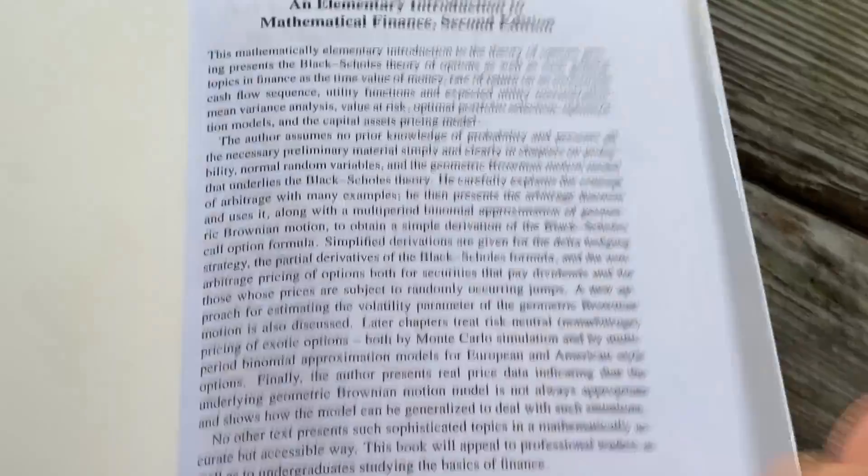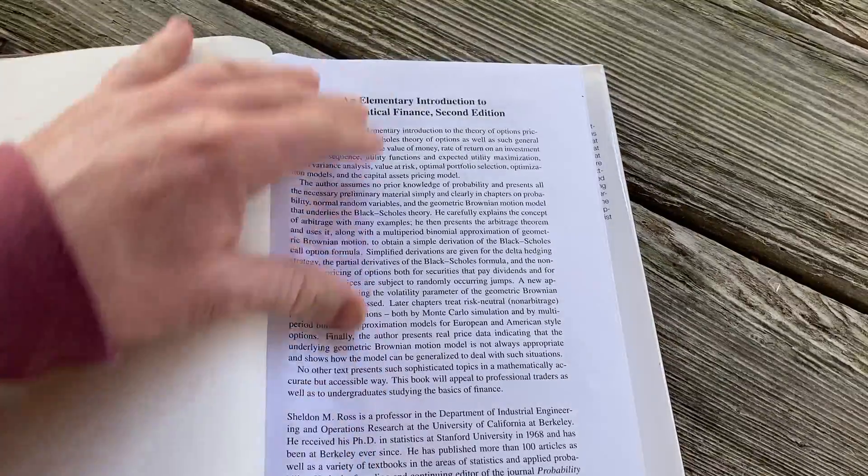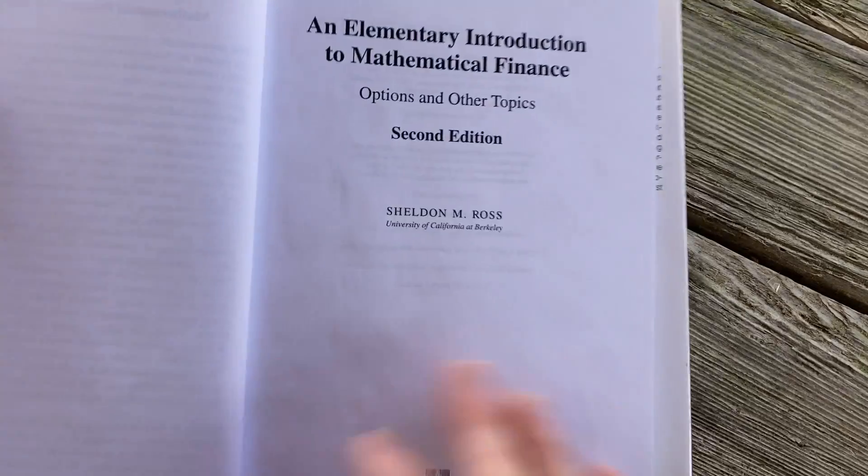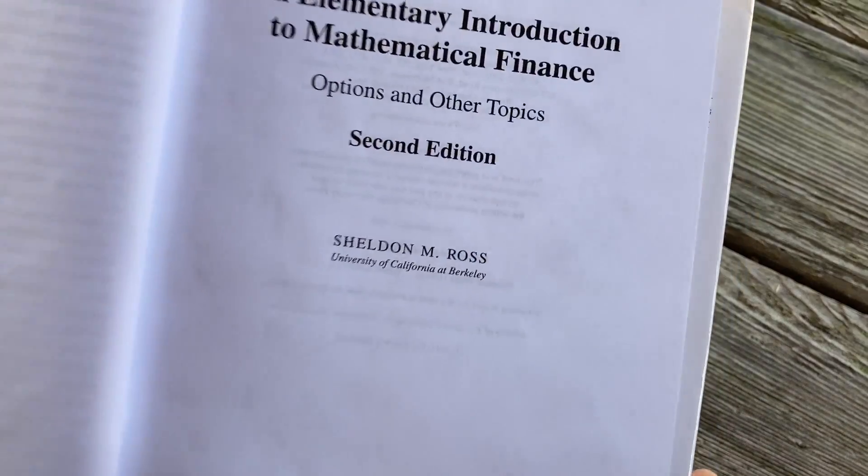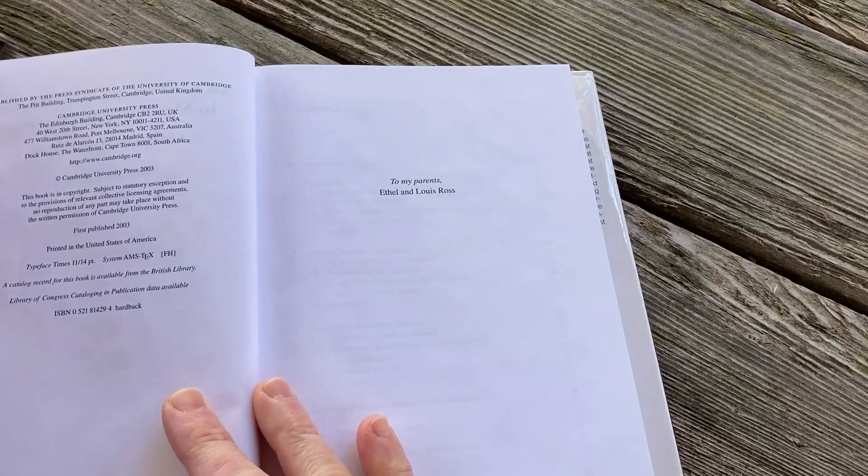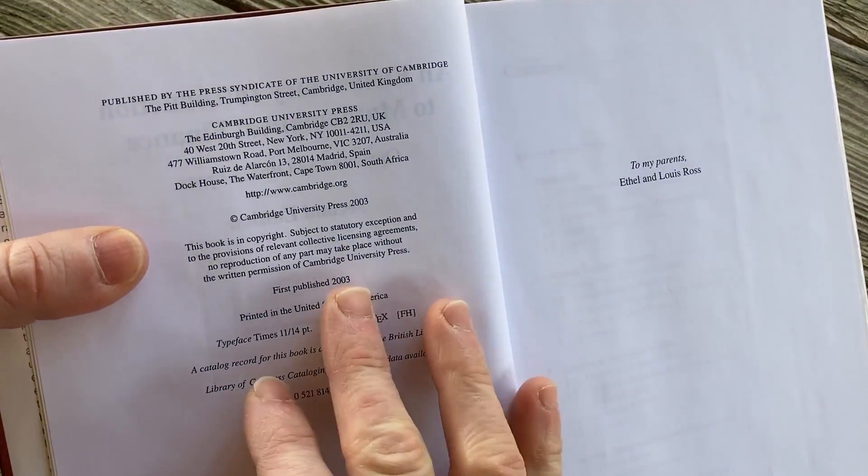Let's open it up and take a closer look. Talks more about it. Talks about Sheldon Ross. This is the second edition. University of California, Berkeley. Very legendary school, Berkeley. And then here's the copyright, 2003. So it's been a while. To my parents, Ethel and Luis Ross.